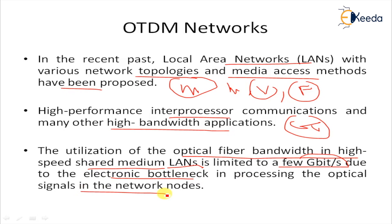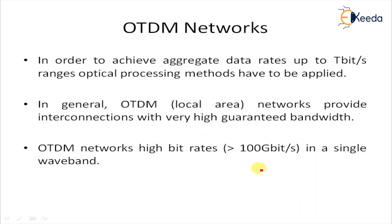This limitation is due to the electronics bottleneck of processing the optical signal in the network node. As a consequence, nodes of the conventional LAN communicate with a single low bit rate with each other, since the network's handling of data packets is presently performed electronically using optoelectronic conversions at each node.